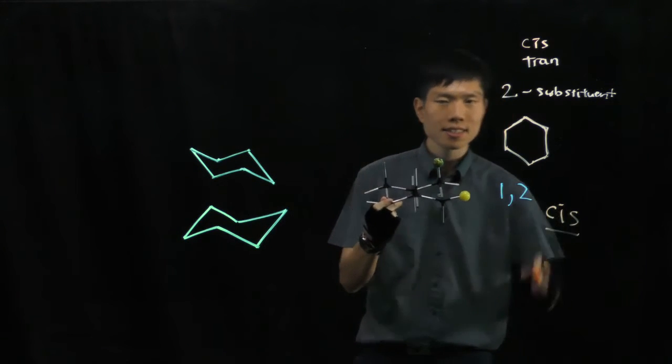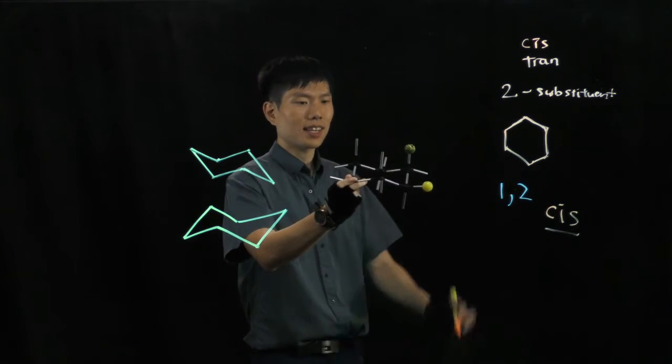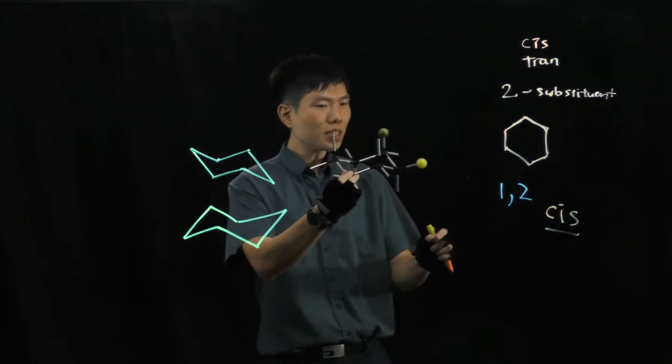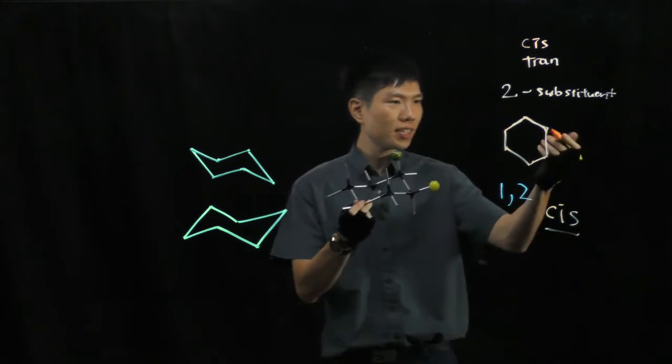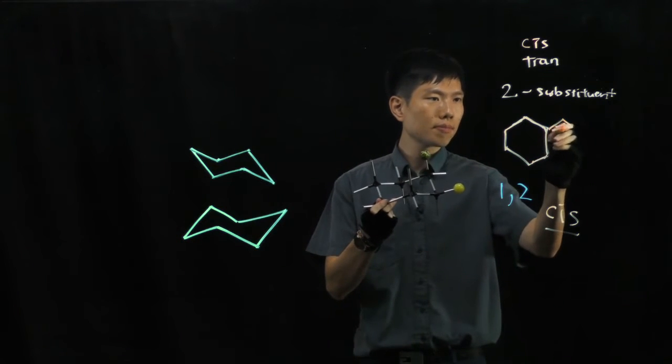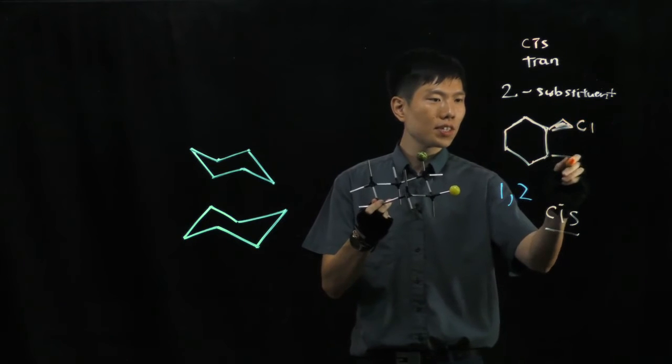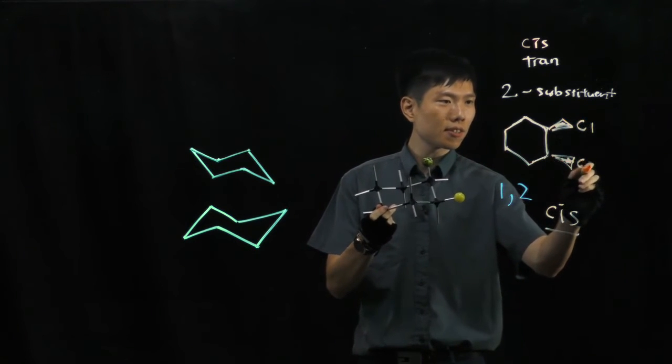Cis isomer here. Now you notice that if it's 1,2-disubstitution, cis, let's consider both to be chlorine, facing same direction because they're cis, right.